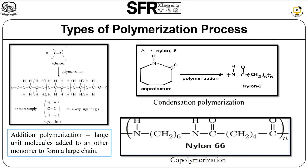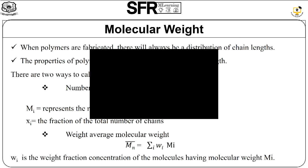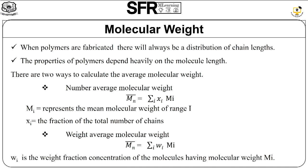Regarding molecular weight: when polymers are fabricated, there will always be a distribution of chain lengths, and the properties of polymers depend heavily on molecular length. There are two ways to calculate the average molecular weight. The first is the number-average molecular weight, denoted as Mn, which equals the summation of xi times Mi, where Mi is the mean molecular weight of a range i and xi is the fraction of the total number of chains. The second is the weight-average molecular weight, which uses wi instead of xi.